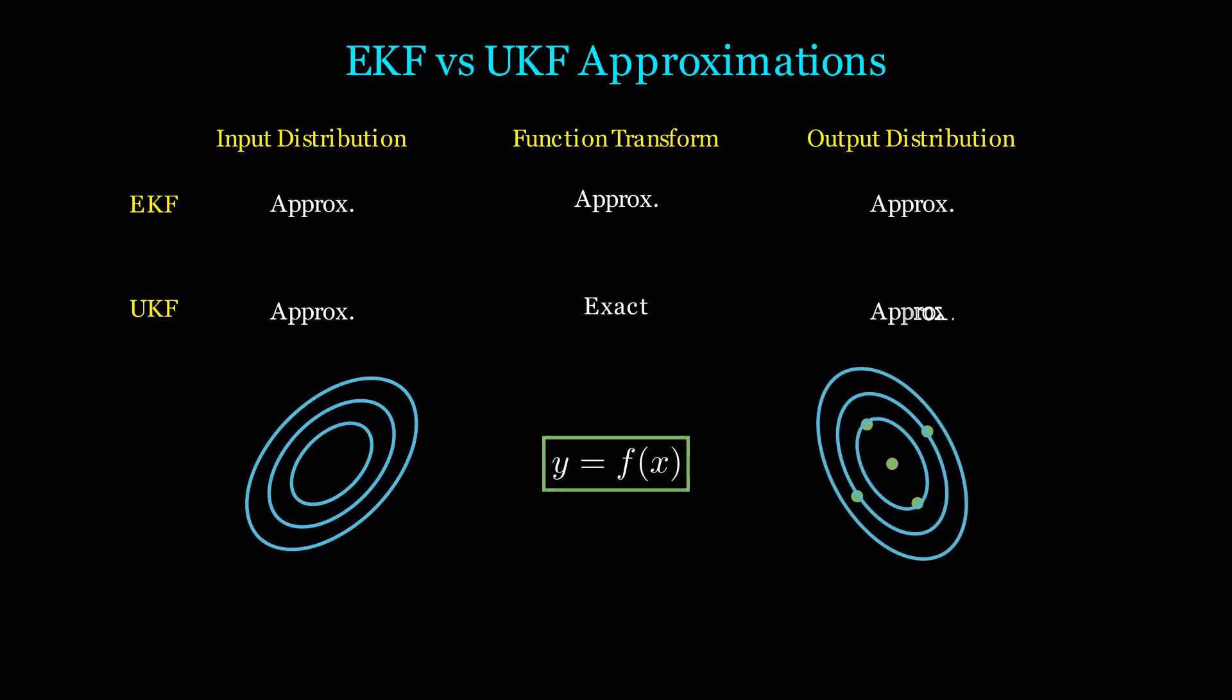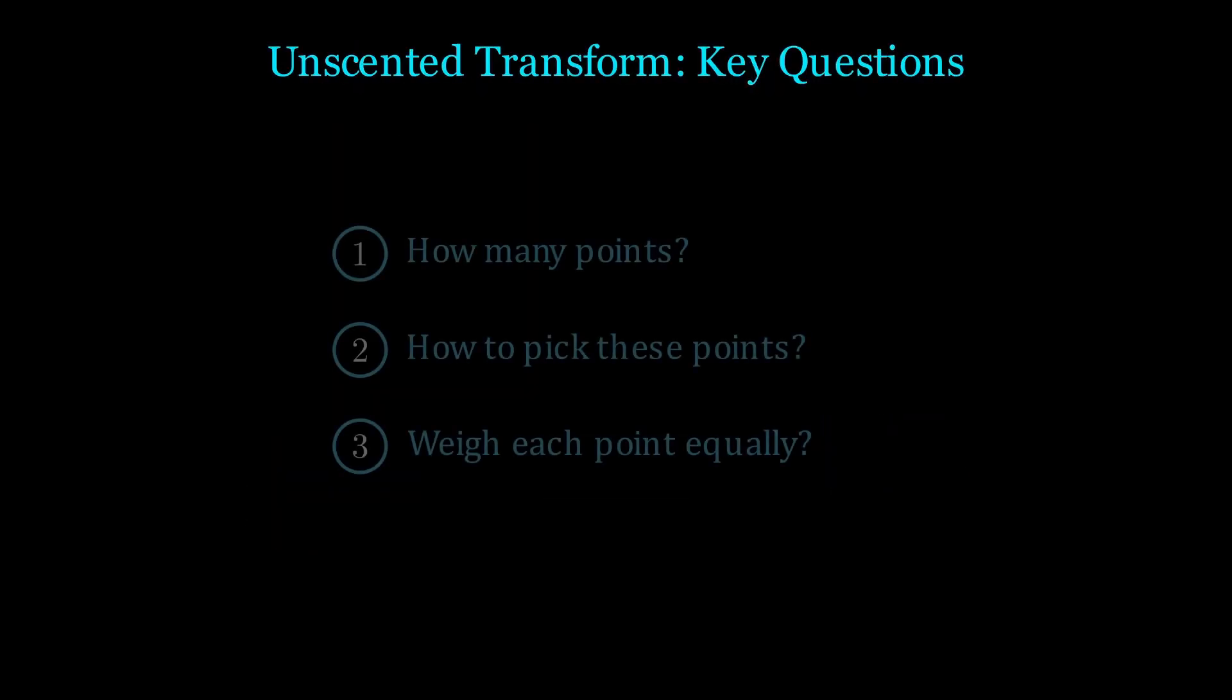As we can see, the goal of the unscented transform is the same as the step in EKF when we apply linearization, but the method is different. We are approximating how a distribution changes through a transform function by only considering samples of the distribution. Let's see how to do this mathematically. We need to unpack and understand the unscented transform. Some key questions are how many points to pick, how to pick them, and how to weigh each point.